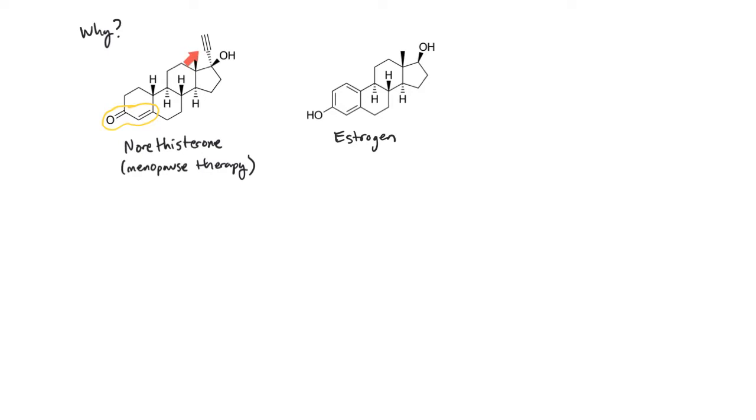And then finally another thing you might notice is this alkyne up here at the top. It turns out that alkyne is really important. What people found doing a lot of studies is that the body is very good at breaking down things like estrogen but if you put an alkyne here the body doesn't know what to do with it and that allows norethisterone to stick around longer in the body and to be effective.